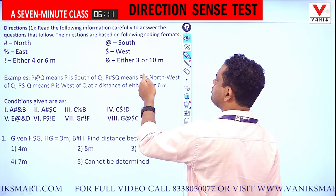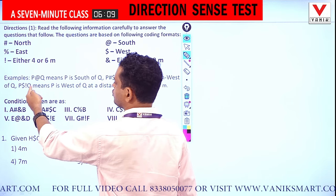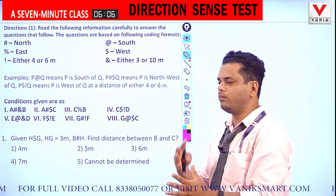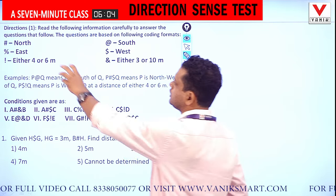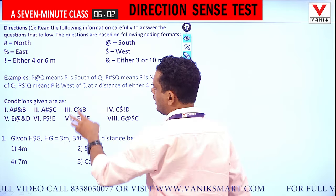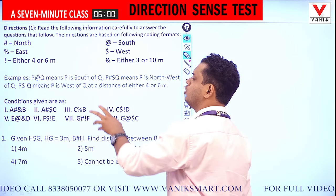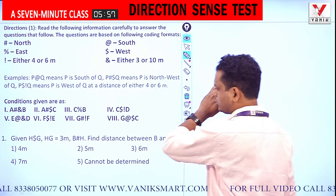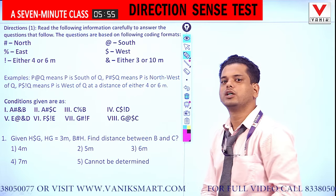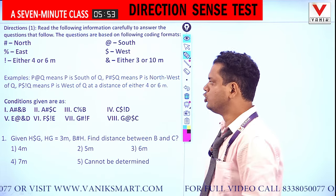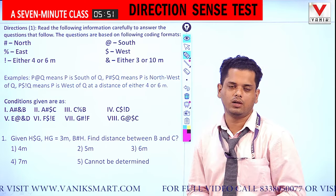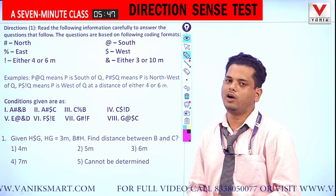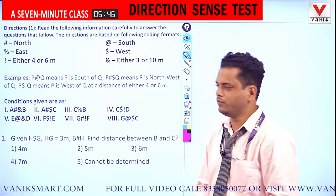Everything is given from left to right. The parameters and conditions are given. After converting this condition into a picture, it is possible to move towards the question — otherwise it is impossible. The diagram is very important because the questions will be very easy after making the diagram.